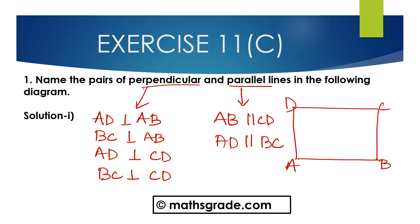So the perpendicular lines are: AB perpendicular to BC, AB perpendicular to AD, AD perpendicular to CD, and BC perpendicular to CD. The parallel lines are: AB parallel to CD, and AD parallel to BC.